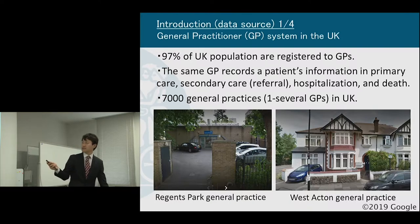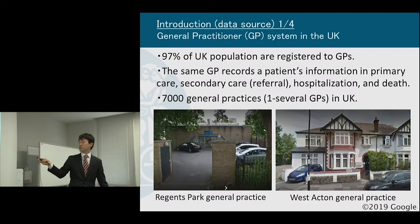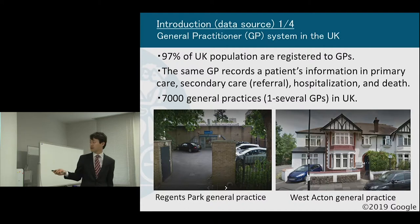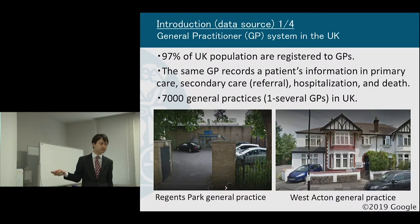There are 7,000 general practices in the UK, and one general practice holds one or more GPs. As an example, there is Regent's Park general practice, which I belonged to during my stay in London. And another example is Acton general practice — there is a kind of Japanese town in London, and this is Acton.